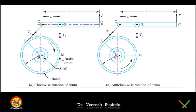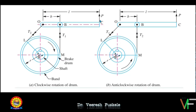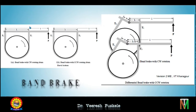This is the line diagram for the band brake. The band, rope, or belt is visible here. In this case the drum is rotating in the clockwise direction, so this side will be the tight side and this side will be the slack side. We denote the tight side as T1 and the slack side as T2, and the force is applied in this direction at the pivoted points. If the drum rotates in the anti-clockwise direction, then the tight and slack sides are reversed.